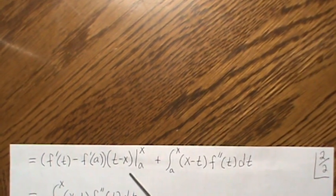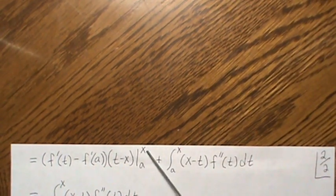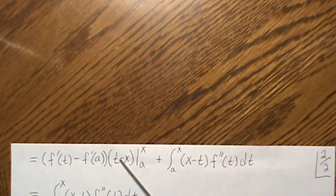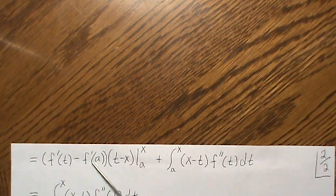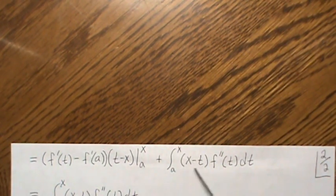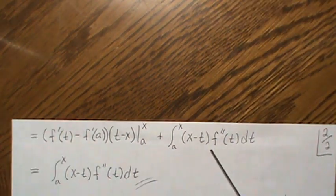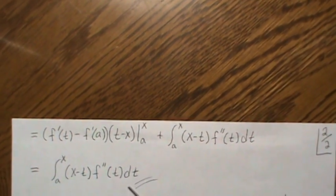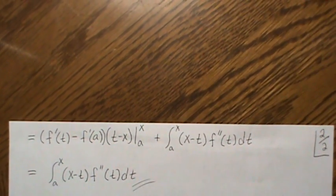So then you plug it into the formula. This is uv evaluated x and a. So now notice that when we evaluate, we put in an x right here, that's zero. And then when we put in an a for t, this part goes to zero. So this goes away, and then we're left with this piece. And this is in integral form. So n equals one is true.